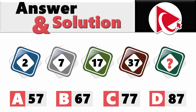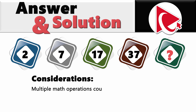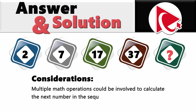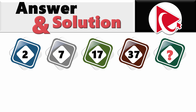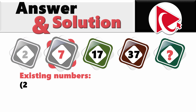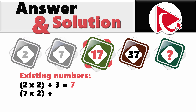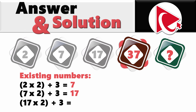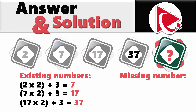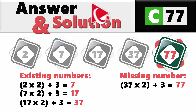Modern sequences on the test are not the sequences our grandparents used to solve. In this particular one, you need to consider multiple math operations — two operations might be involved to get to the next number. The first number is 2, and the next number is calculated as double the previous number plus 3. So: 2×2+3=7; 7×2+3=17; 17×2+3=37; and the missing number is 37×2+3=77. The correct answer is Choice C, 77.